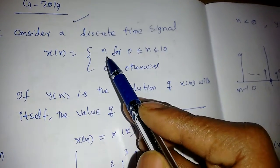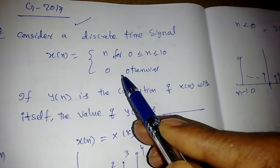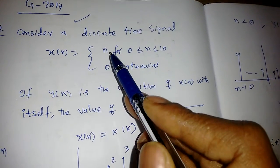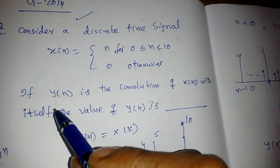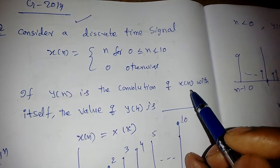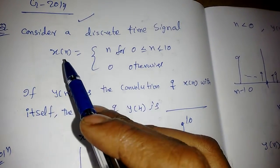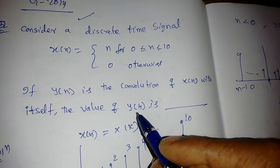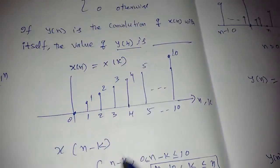Consider discrete time signal x[n] = n for 0 to 10, and 0 otherwise — it's like a ramp signal but only from 0 to 10. If y[n] is the convolution of x[n] with itself, we have to find the value of y[4].